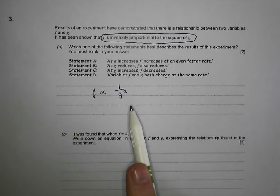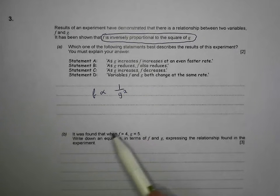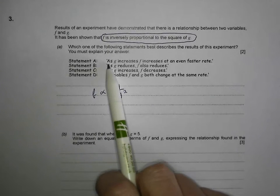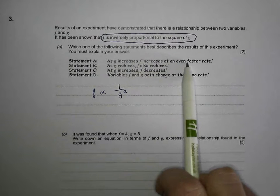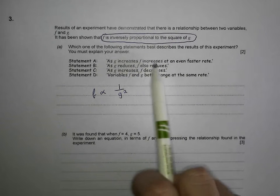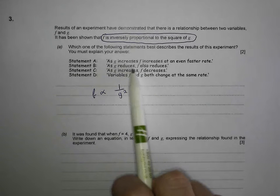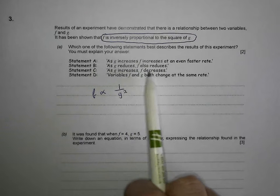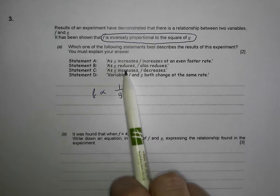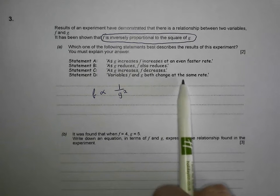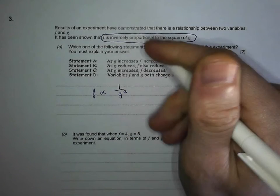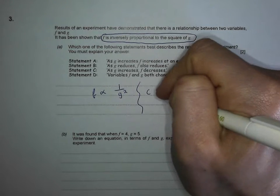Inverse proportion means they've got an opposite relationship to each other. If f goes up, g goes down. If g goes up, f goes down. Let's see which statement fits. As g increases, f increases - no, can't be true because it's inversely proportional. As g reduces, f also reduces - no, they're going in the same direction. As g increases, f decreases - that's sounding more like it, that's inverse. Variables f and g both change at the same rate - no, we've got a squared involved. Statement C has got to be the right one, so I'm going to put C is correct.